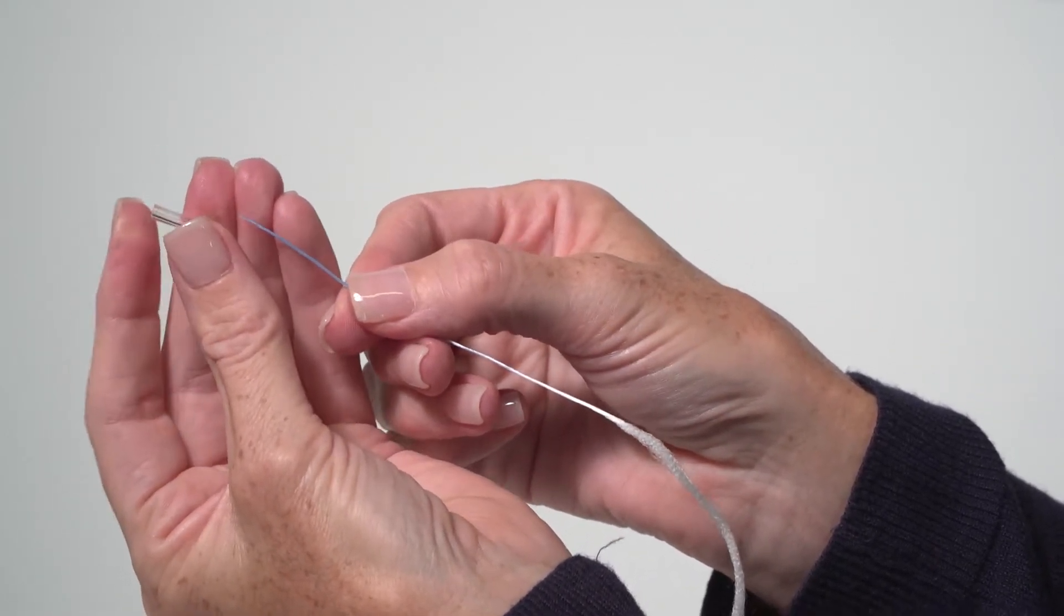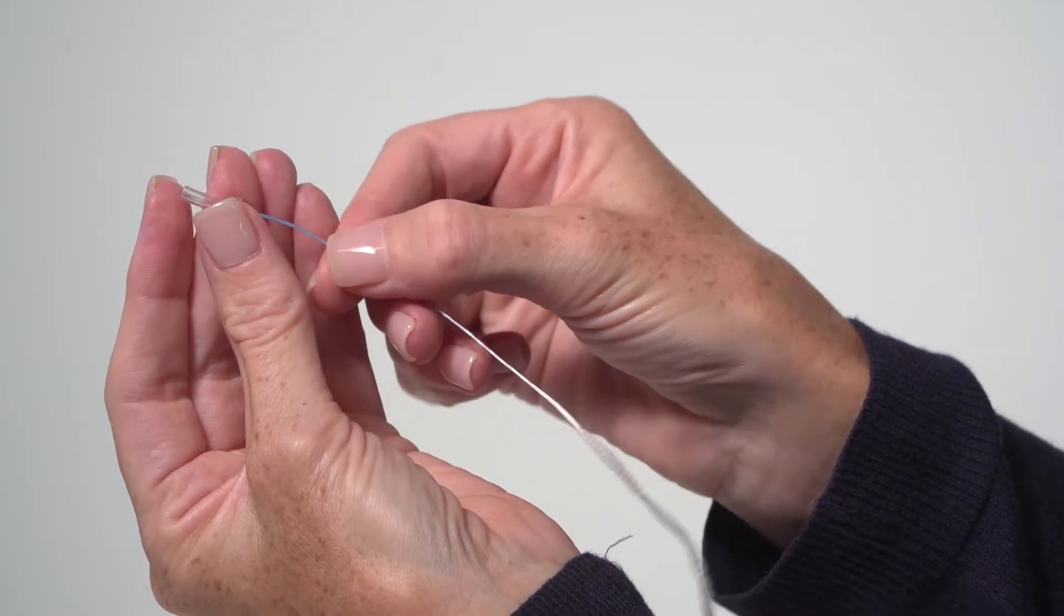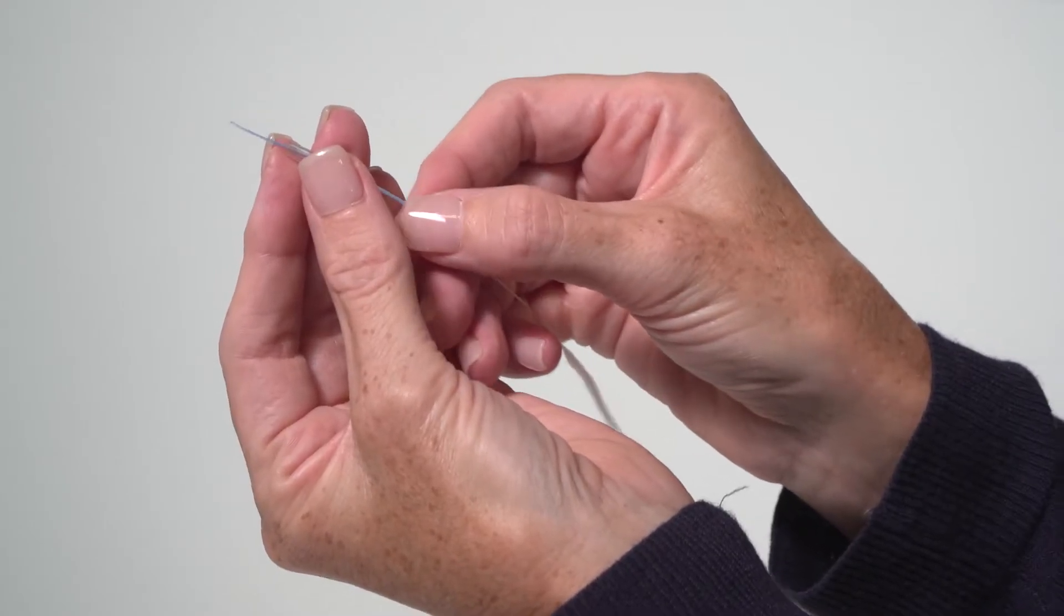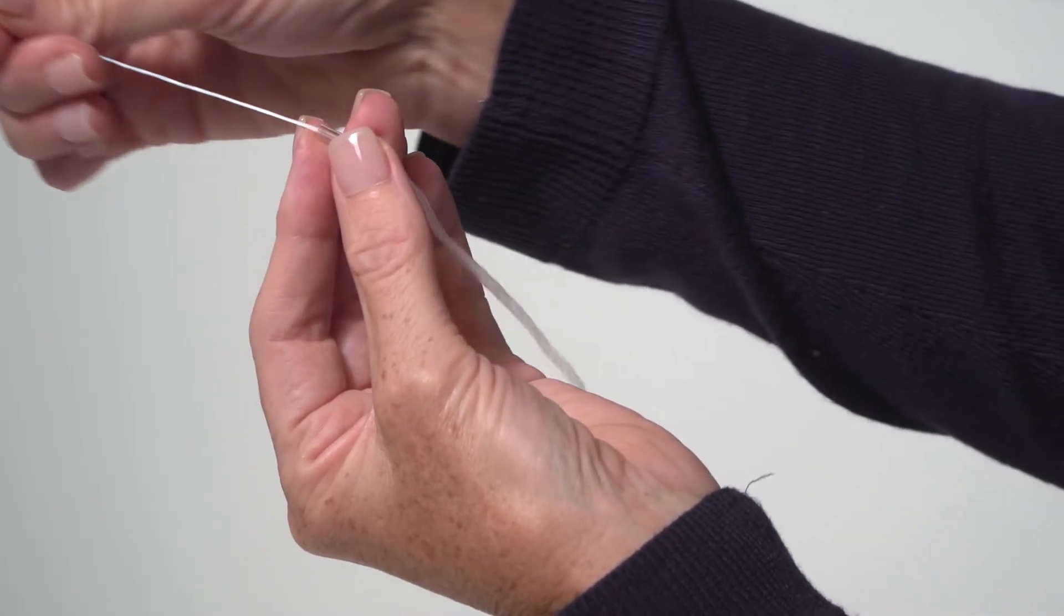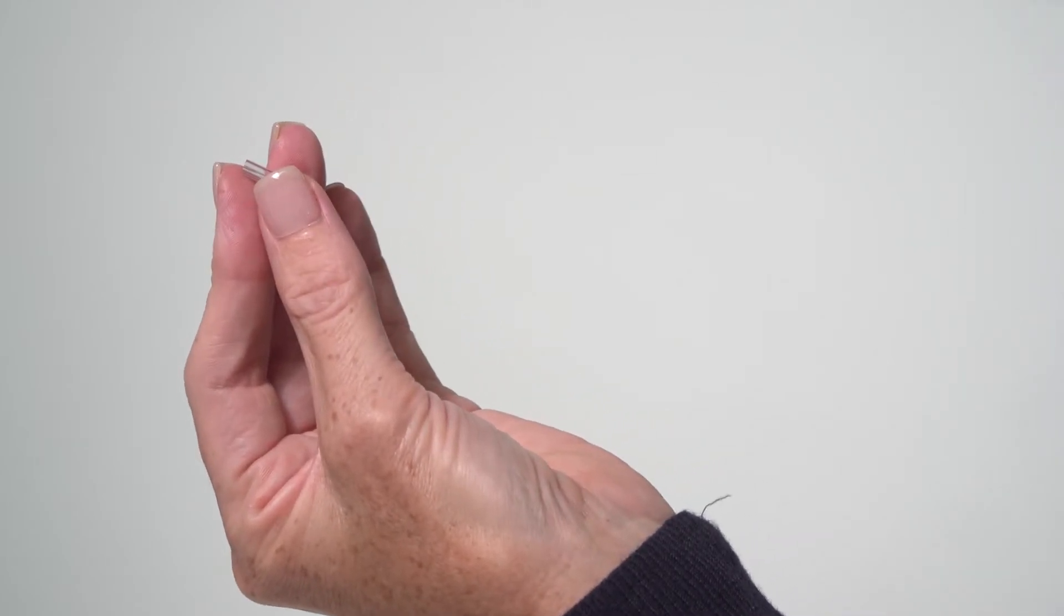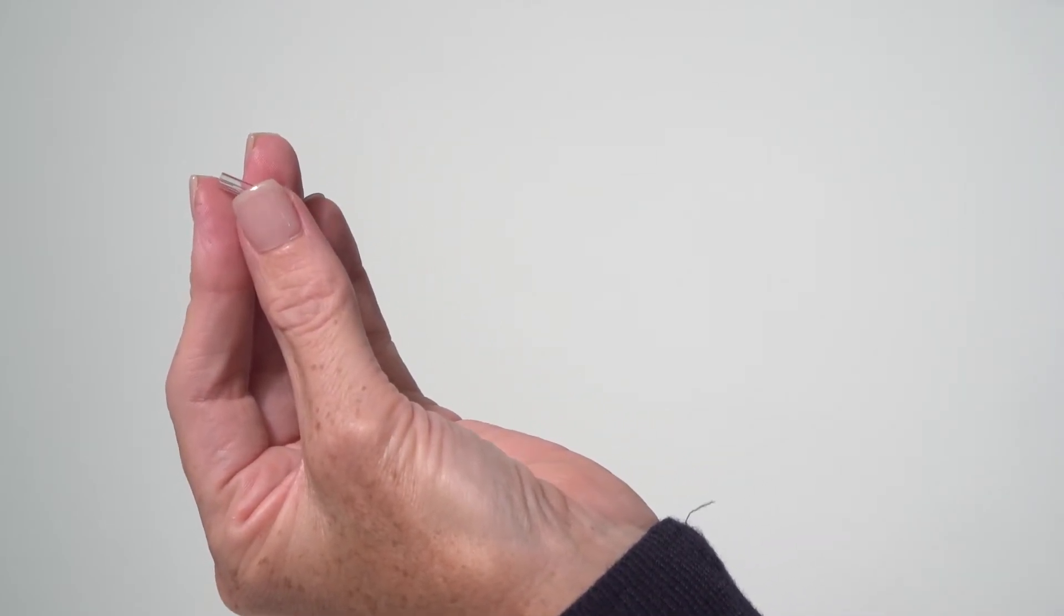Insert the blue end of the floss from back to front through one of the probe channels. Pull the floss along its entire length through the channel. Always enter the probe tube from the rear to avoid accumulation of debris inside the vents. Proceed in the same way with all probe channels.